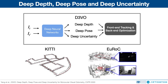In this work, we propose D3VO, a novel monocular visual odometry framework which exploits deep neural networks on three levels: deep depth, pose, and uncertainty. D3VO integrates the three estimations tightly into both the front-end tracking and back-end optimization of a sparse direct odometry framework. Evaluation results show that D3VO can deliver comparable results to state-of-the-art stereo, LiDAR, and visual inertial odometry while using only a single camera.